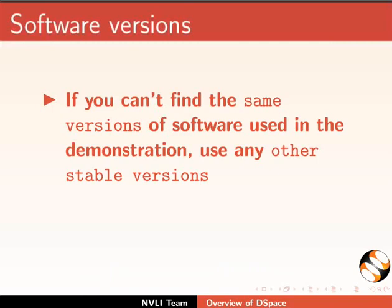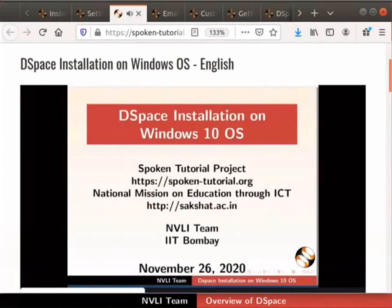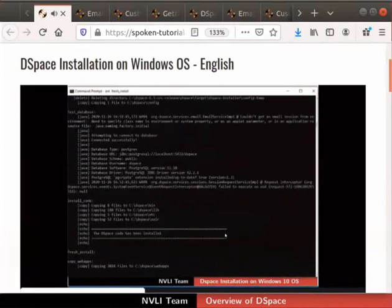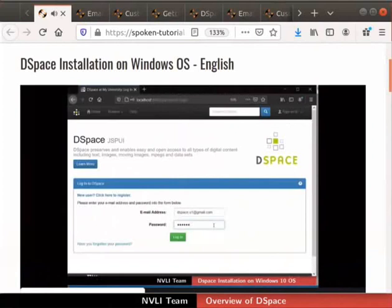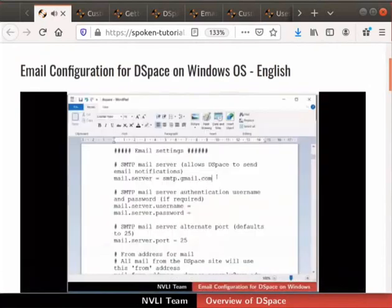If you can't find the same versions of software used in the demonstration, use any other stable versions. But it is mandatory to use only JDK 8 with any release. In the DSpace installation tutorial, we will see how to download, build, and install DSpace 6.3. We will also create a DSpace administrator account and login to DSpace. In the next tutorial, we will see how to configure email settings in DSpace hosted on Windows 10.